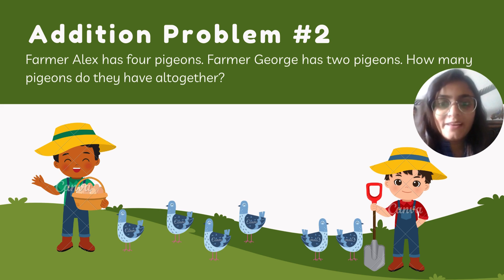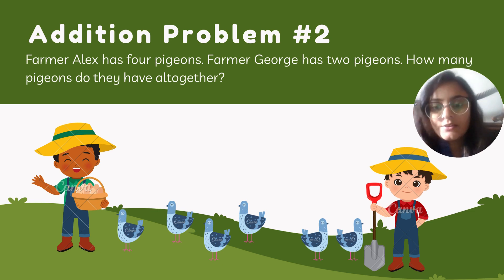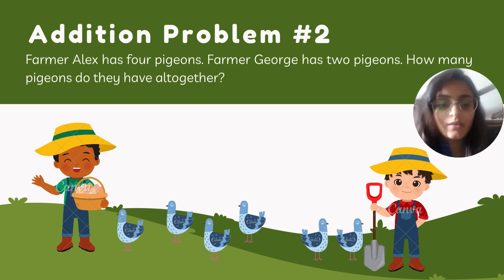Addition problem two: Farmer Alex has four pigeons and Farmer George has two pigeons. How many pigeons do they have altogether? This is Farmer Alex who has one, two, three, four pigeons. This is Farmer George who has one, two pigeons.